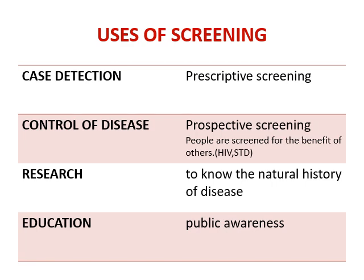The uses of screening: first is case detection, called prescriptive screening, done for the patient's own benefit — it finds disease and allows early detection. The second use is control of a disease, called prospective screening, where people are screened for the benefit of others. In infectious diseases, a large number of people — both symptomatic and asymptomatic — are screened to control the disease.